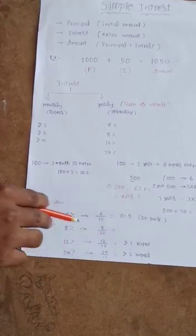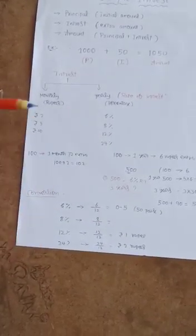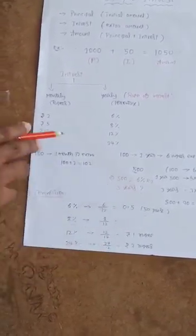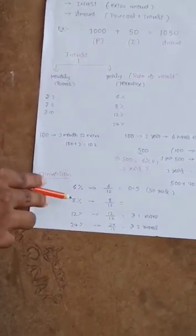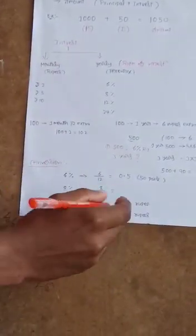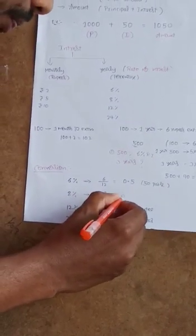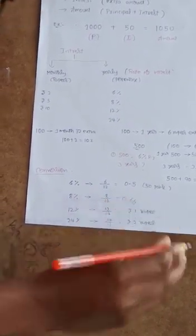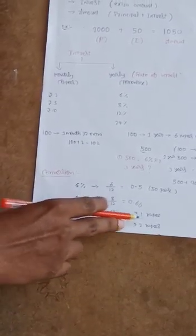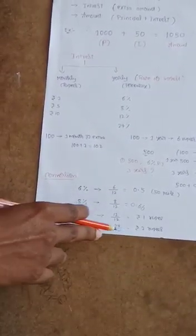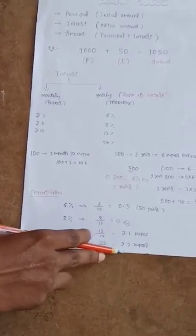For conversion of rate of interest to monthly: 8% divided by 12 gives nearly 0.66%. 12% rate of interest means 12 divided by 12, which equals 1 rupee per month. 24% interest means 24 divided by 12, which equals 2 rupees. Like this, we can convert yearly rates to monthly.